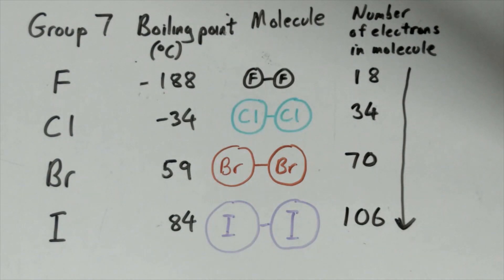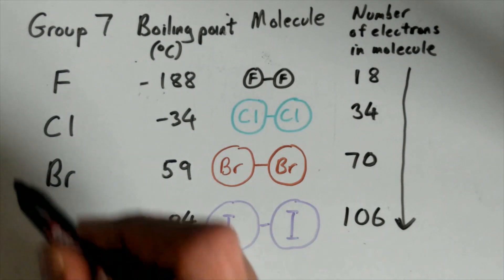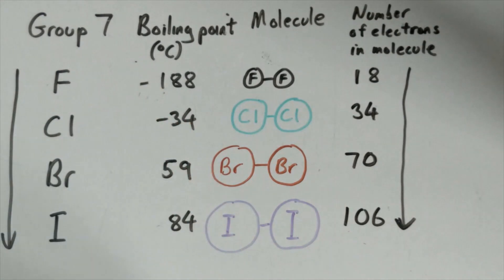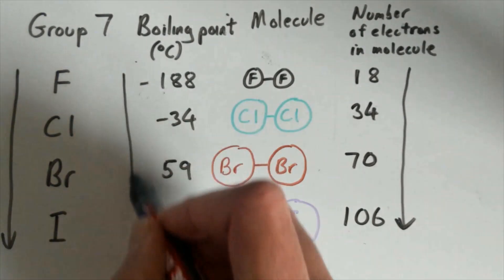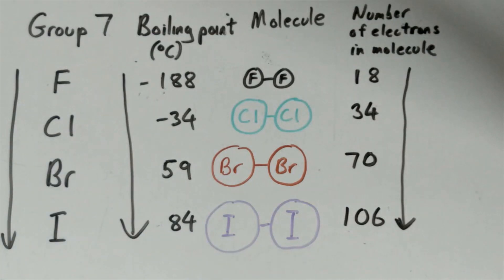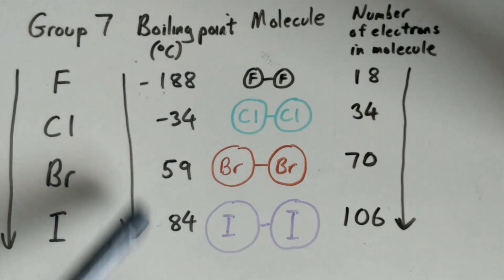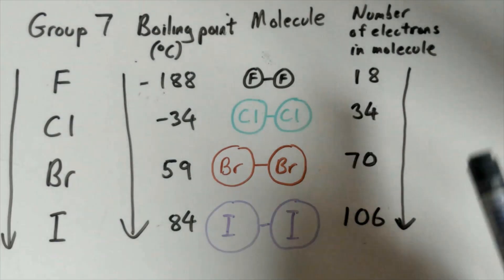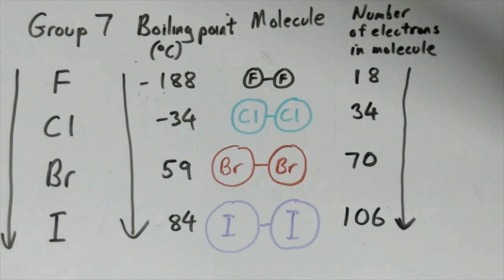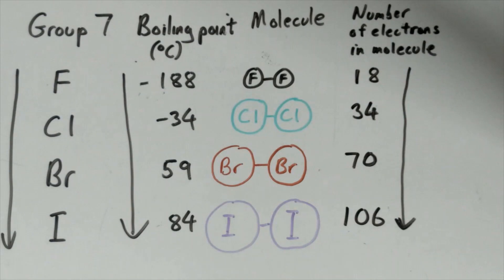As you go down group seven, the trend for the halogens in terms of boiling point is similar to the trend seen with the noble gases — the boiling point increases as you go down the group. Again, the reason is because the number of electrons in the molecule increases. This time we talk about the number of electrons in the molecule rather than the atom, because the halogens pair up as diatomic molecules to fill their energy levels.